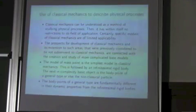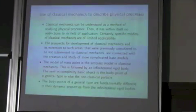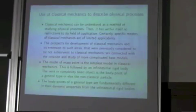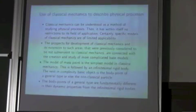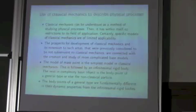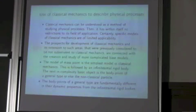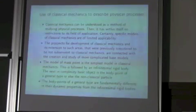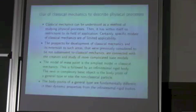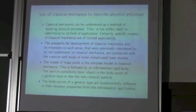I consider classical mechanics as a method for description of physical processes. If we use more complicated models than mass points and rigid bodies, we can try to describe some physical processes and phenomena which are now considered as going beyond classical mechanics. For example, I believe that if we use body points of a general type, we can be successful.